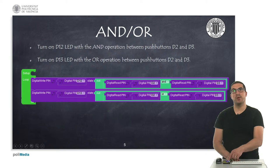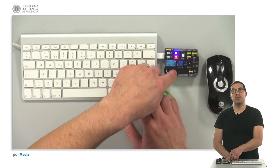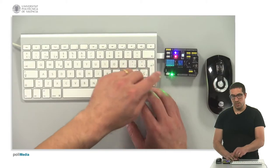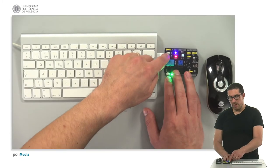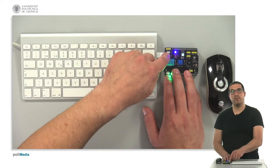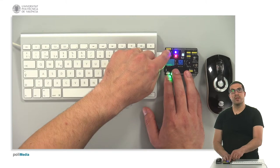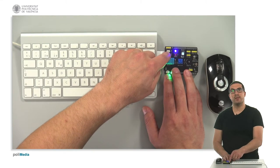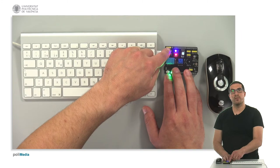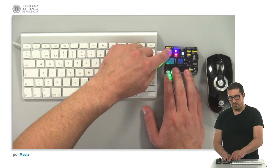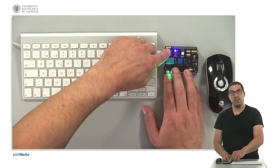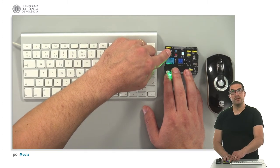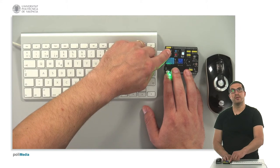I have already uploaded the code into the board, so now if I press one of the buttons, then the red LED will turn off. And if I press both of them together, then both of them are off.